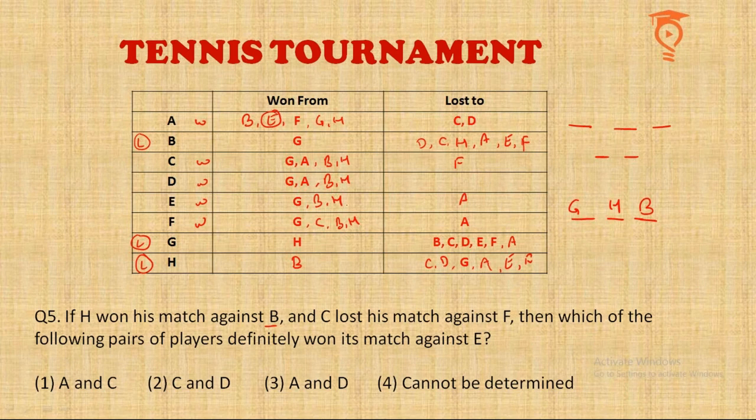E lost to A, so E is in line as a winner who lost to only one of the other winners — confirming A is definitely a winner. E must have lost to two people among the winners group.